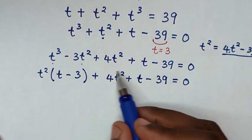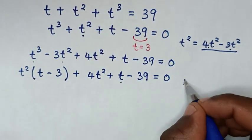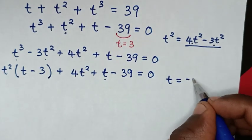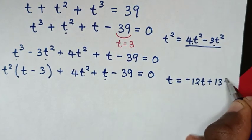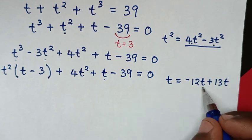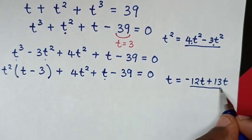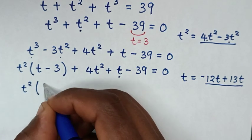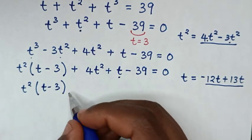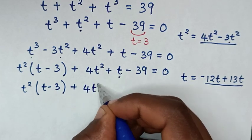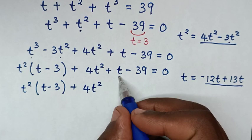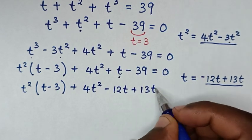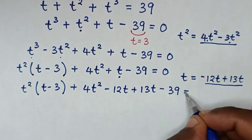We make the remaining part divisible by 3. We rewrite t as −12t + 13t, since 13t − 12t = t. Substituting, the equation becomes t^2(t − 3) + 4t^2 + (−12t + 13t) − 39 = 0.